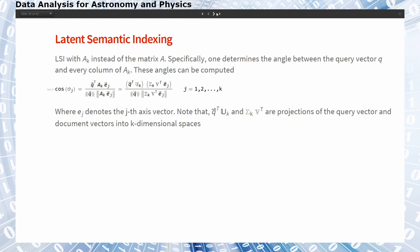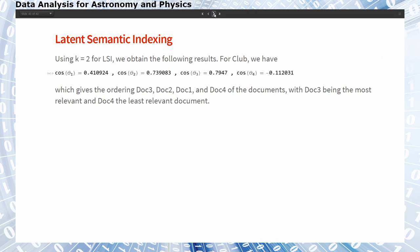When we work with A_k instead of the original matrix A, we can again compute the angles of our query vector with our approximated matrix A, and then find the projections of the query vector and the document vector onto this k-dimensional space. When we use k equals 2 for our example, we find these angles for our cosines when we are looking for the word club, which gives the ordering document number 3, document number 2, 1, and document number 4, where the first one is the most and the last one is the least relevant document.